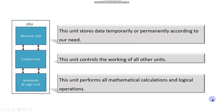The CPU consists of three units. First, the memory unit, which stores data temporarily or permanently according to our need. Second, the control unit, which controls the working of all other units — input devices, output devices and storage devices. Third, the arithmetic and logic unit, or ALU, which performs all mathematical calculations and logical operations.